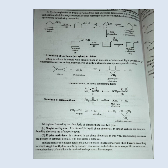Methylene formed by the photolysis of diazomethane is of two types. First, singlet methylene: it is formed in liquid phase photolysis. In singlet carbene, the two non-bonding electrons are of opposite spin.